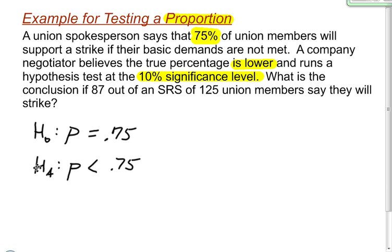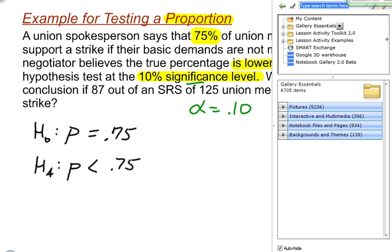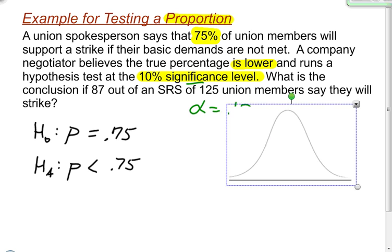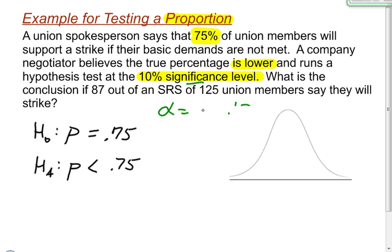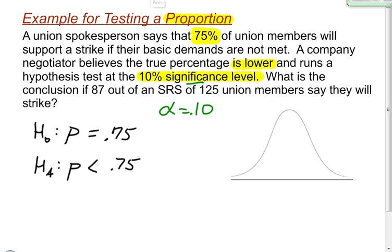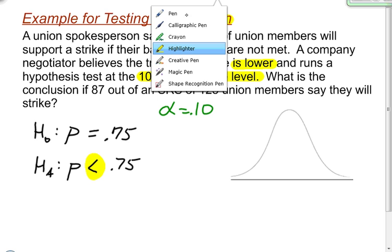The next thing I want to do after writing my null and alternative hypothesis is create my rejection region. The alpha level, which is my significance level, is 10%, or 0.10. Knowing that, I'm going to draw a picture of a normal model and create my rejection region on it. I also need to make note of the symbol in my alternative hypothesis. The symbol is a less than symbol, and that tells me this is going to be a left-tailed test.